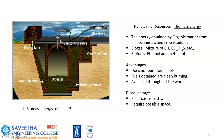Biomass energy is obtained from organic matter such as plants, animals, and crop residues. Biomass produces methane, complex compounds, and hydrogen sulfide. Biofuel includes ethanol and other platforms. Advantages: does not burn fossil fuels, burns cleaner, and is available throughout the world. Disadvantages: plants are less costly but require possible large space.